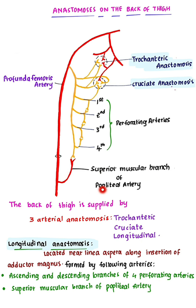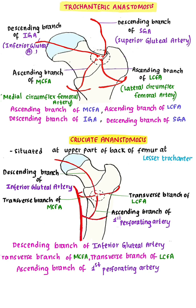The ascending branch of the first perforating artery takes part in the cruciate anastomosis. The trochanteric anastomosis is situated near the trochanteric fossa. It is formed by two ascending branches and two descending branches: the ascending branches of the medial and lateral circumflex femoral arteries, and the descending branches of the inferior and superior gluteal arteries.